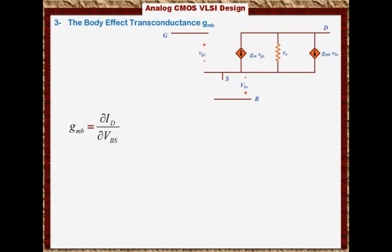When you carry the math, this will equal μn × Cox × W/L × (Vgs - Vth) × (-∂Vth/∂Vsb). And this is basically using the chain rule, because the threshold voltage is a function of Vbs.